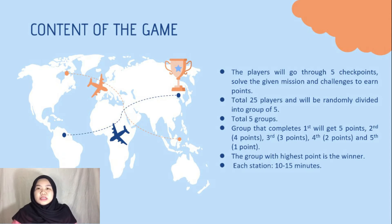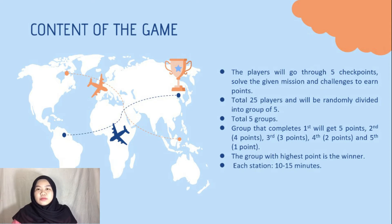All the questions and missions are related to the concept of Green Airlines. Firstly, the players will be divided into groups randomly. There are five groups and each group has five players. The group that completes first will get five points, second will get four points, third will get three points, fourth will get two points, and fifth will get one point. The group with the highest points will be the winner.